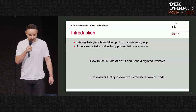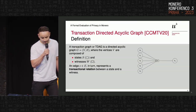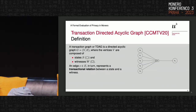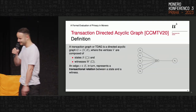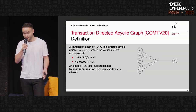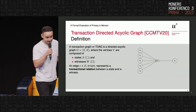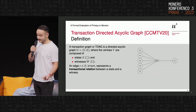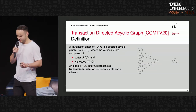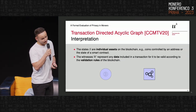The question is: how much is Leia at risk if she uses a cryptocurrency? To answer that, we introduce a formal model built upon the Transaction Directed Acyclic Graph. This graph is composed of vertices and edges. Vertices are of two types: states and witnesses, and the edges represent transactional relations between them.